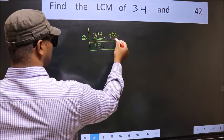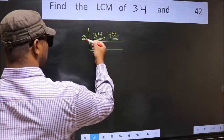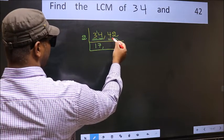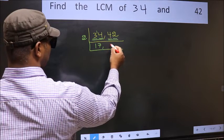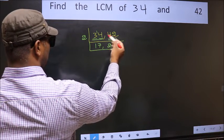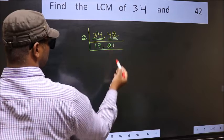The other number 42, last digit 2 is even, so this is divisible by 2. First number 4, when do we get 4 in 2 table? 2 2s 4. The other number 2, when do we get 2 in 2 table? 2 1s 2.